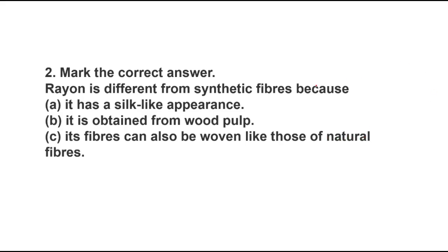The second question is: Mark the correct answer. Rayon is different from synthetic fiber because - look at the options. It has a silk-like appearance, but is it only because of silk-like appearance? Second one: it is obtained from wood pulp. Third one: its fiber can also be woven like those of natural fibers.